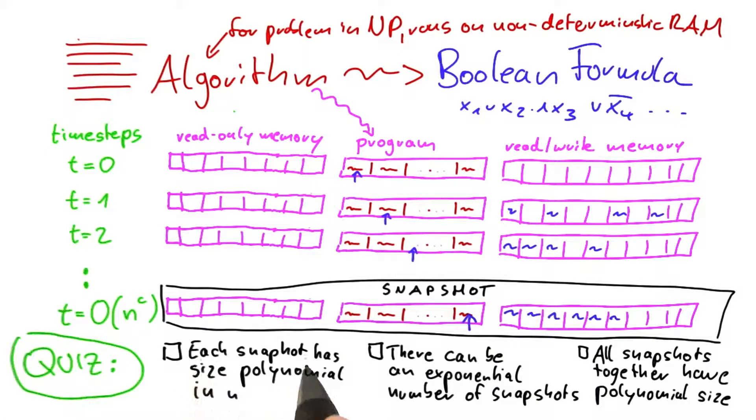So first of all, each snapshot has size polynomial in n. That is true. So why is that? Well, first of all, we said the size of the input is a polynomial of n. Or oftentimes it is n, but sometimes it can also be a polynomial. So for example, when we are given a graph with n vertices, then there can be up to n squared edges. But in any case, the input is some polynomial of n.